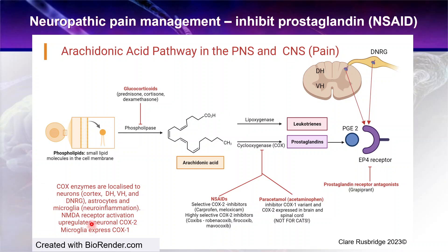Many processes are involved in activation of these enzymes, in particular NMDA receptor activation. Those aware of the neurobiology of pain will know that NMDA receptor activation is a very important process — it will upregulate neuronal COX-2. Microglia also exhibit COX-1. COX is the cyclooxygenase enzyme involved in conversion of arachidonic acid to prostaglandin.